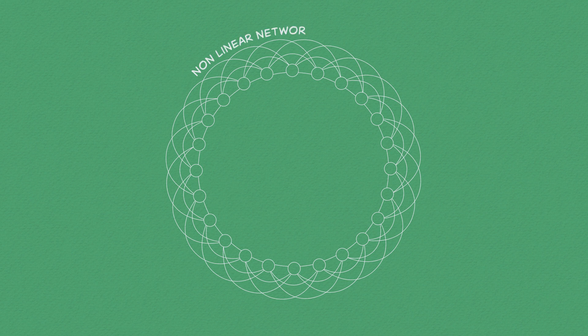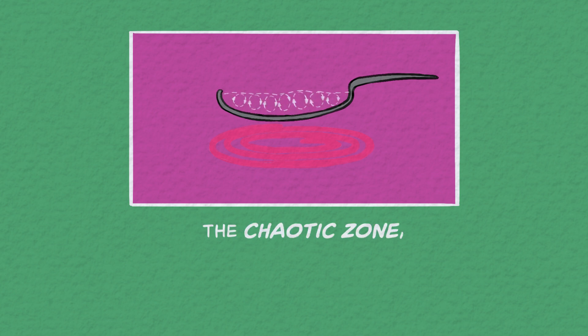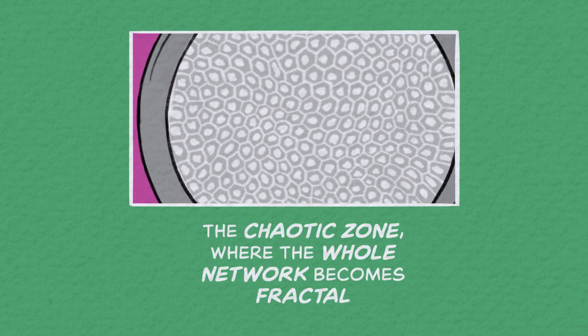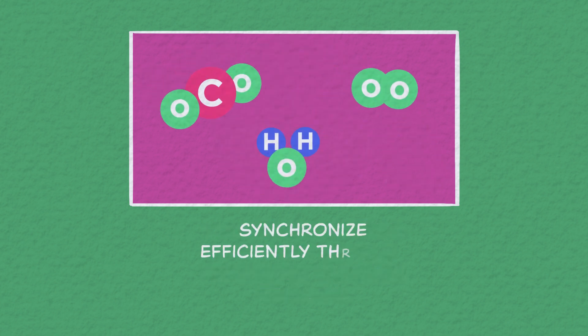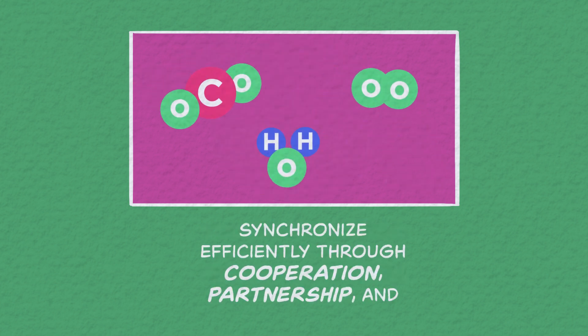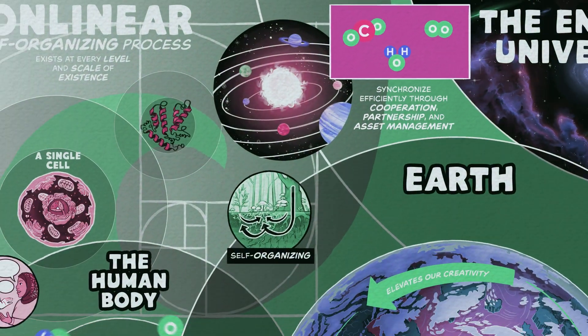Non-linear networks blend order and randomness, resulting in a system that is both highly interconnected and flexible. Flexible enough to function far from equilibrium in the chaotic zone, where the whole network becomes fractal, a quality that allows for members of the network to synchronize efficiently through cooperation, partnership, and asset management, collectively creating a whole greater than the sum of its parts.